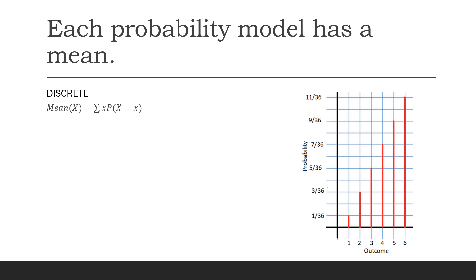Each probability model has a mean. For discrete random variables, the way that we find the mean is we take each value in the outcome set, multiply it by its associated probability, and add them all up.